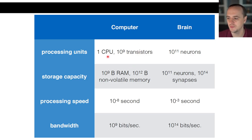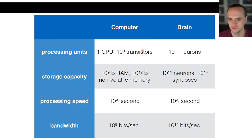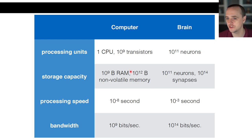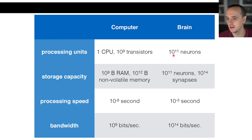A computer's CPU has typically around a billion transistors. The brain has a lot more neurons than your typical CPU. Not only are there a lot of neurons, but there are a lot of synapses between them — currently the brain has more things going on inside it than a typical CPU. Storage capacity in a computer is maybe a terabyte of RAM, whereas in the brain you've got 10 to the 11 neurons and 10 to the 14 synapses — think hundreds of trillions of these things.